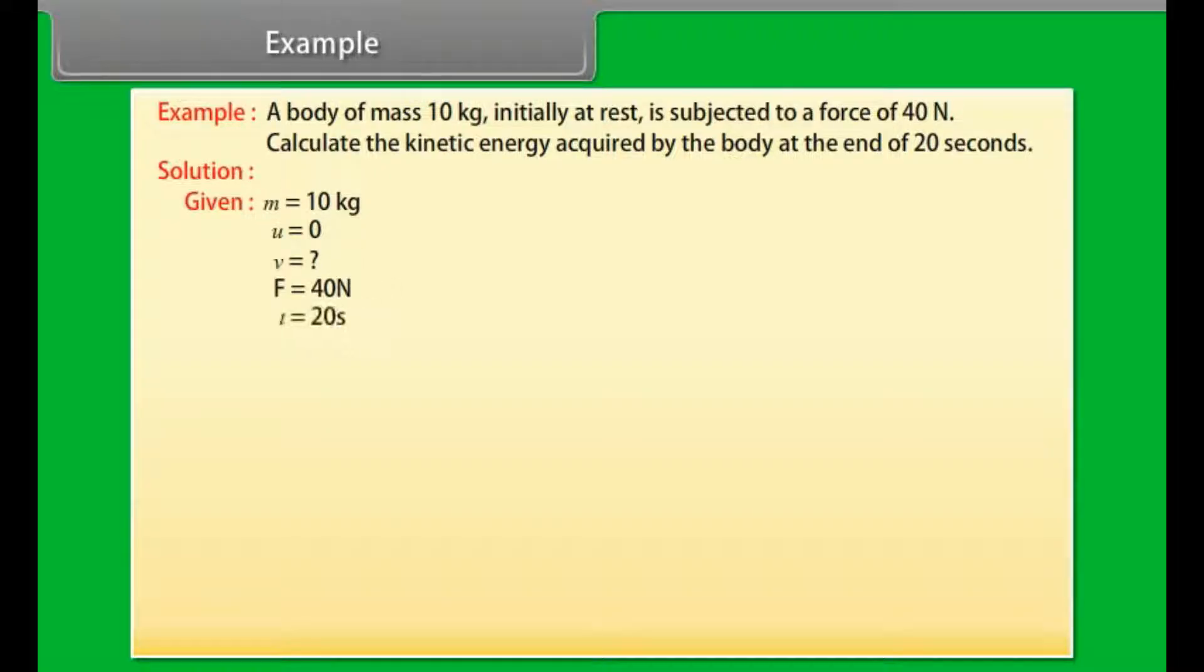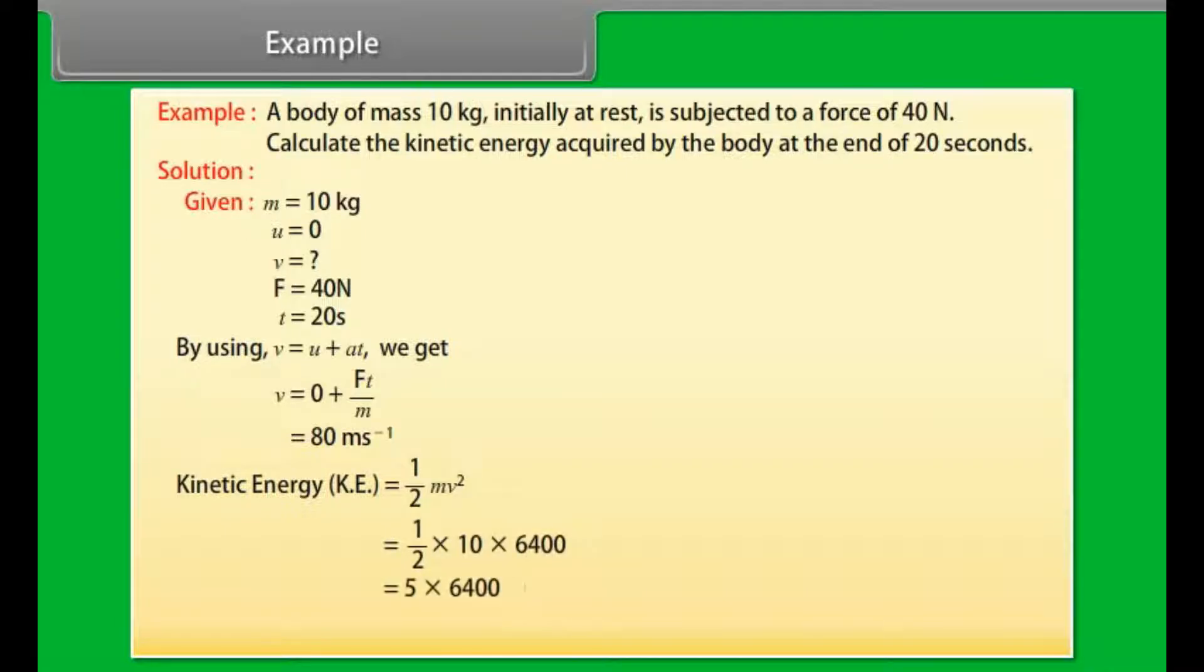By using v = u + at, we get v = 80 meter per second. Kinetic energy = ½mv². On calculating, we get kinetic energy = 32,000 joules.